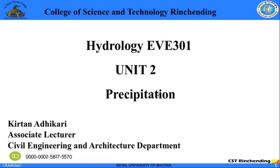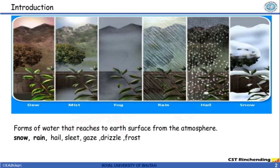Let's start with a new unit: precipitation. Precipitation is the collective term used to describe the forms in which water returns to the earth, predominantly rain and snow, but there are other forms such as hail, frost, and haze, among others. In our discussion, precipitation is used synonymously with rainfall, as other forms do not contribute to runoff as much as rain.